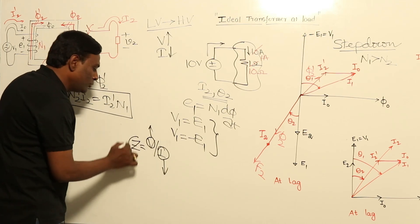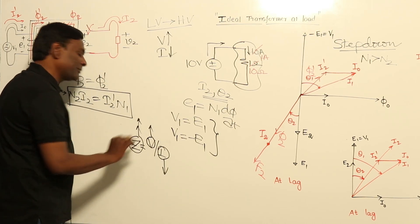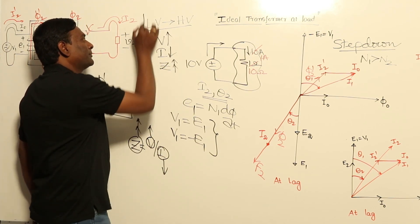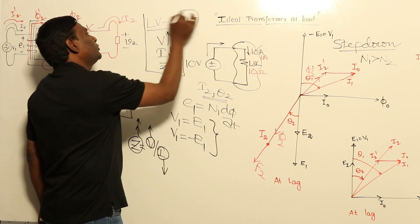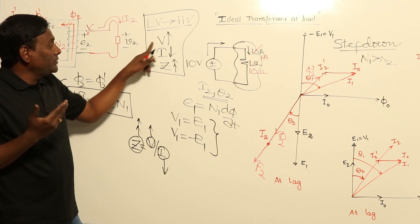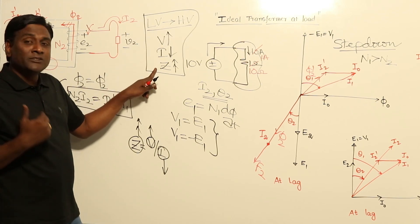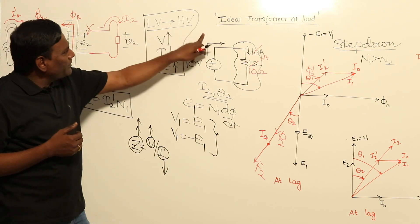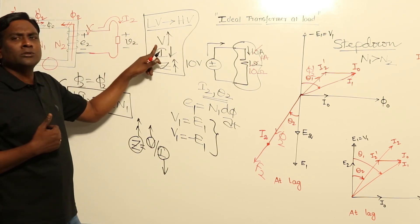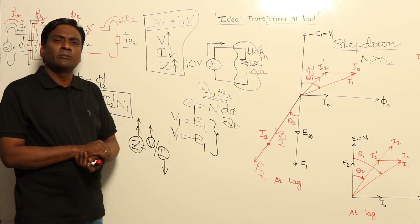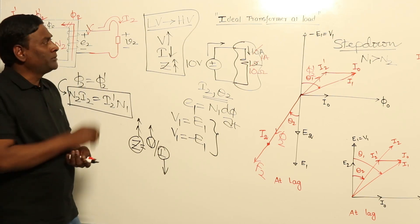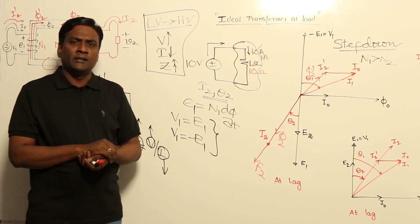For impedance reflection from LV to HV side: voltage magnitude increases, current magnitude decreases, and since impedance Z = V/I, the numerator increases while the denominator decreases — so impedance is increased by a factor of turns-ratio squared. Similarly, from HV to LV: voltage reduces, current increases, and impedance is reduced by the square of the turns ratio. With this, we are ready to solve problems on ideal transformer at loaded conditions.